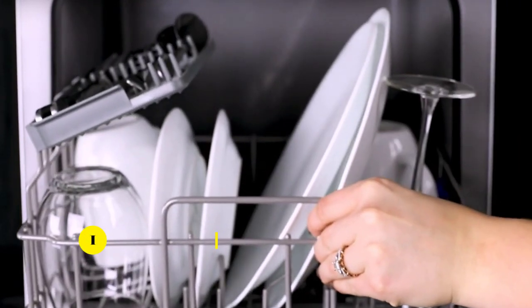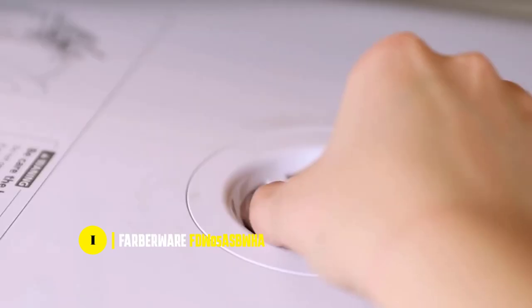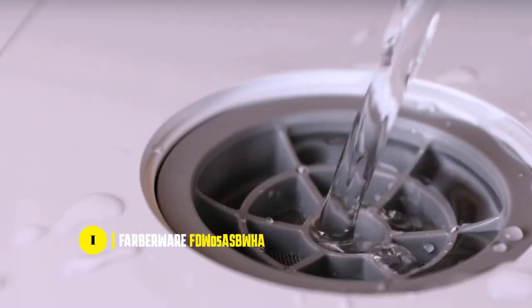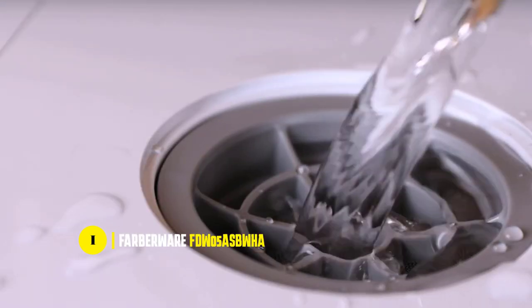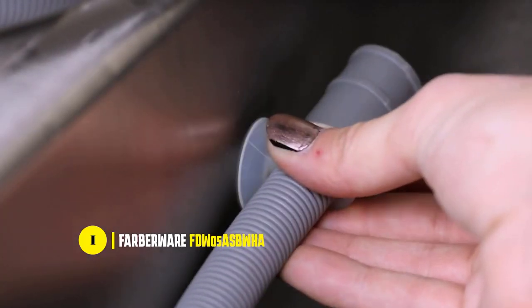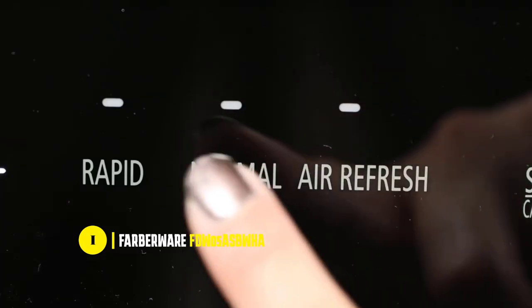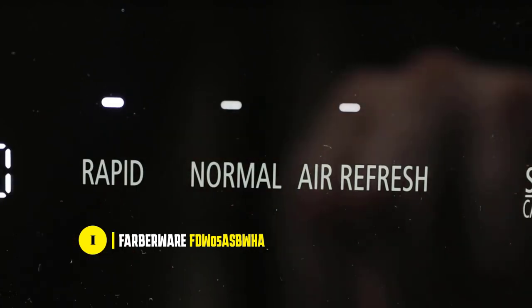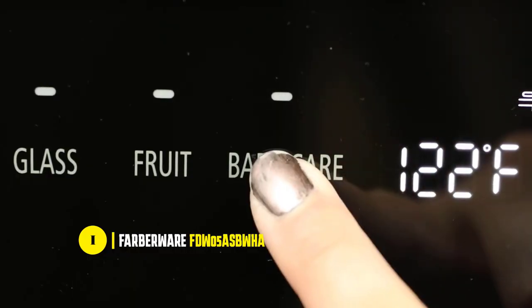Last but not least, we have the Farberware FDW5 Countertop Dishwasher. The countertop dishwasher is an excellent choice for those looking for an affordable and efficient dishwasher. This compact dishwasher can fit up to 12-inch dishes at an angle, making it ideal for small-sized homes, apartments, dorms, boats, and campers.